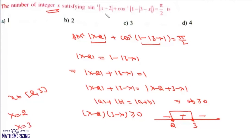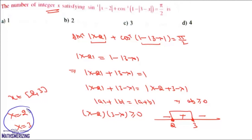The integral values of x in [2, 3] are x = 2 and x = 3. Checking: x = 2 gives sin⁻¹(0) + cos⁻¹(0), which lies in the domain; x = 3 gives sin⁻¹(1) + cos⁻¹(1), also in the domain. So there are two integral values, x = 2 and x = 3, and the answer is 2, which is option B.